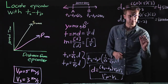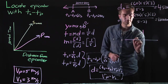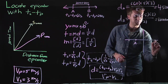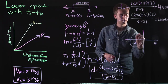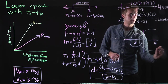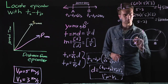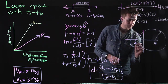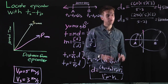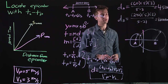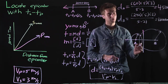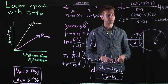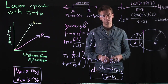To narrow down the direction, we can draw a circle around each station where the radius equals the distances we just found. The circles intersect at two points, giving us two possible locations for the epicenter. To decide which is correct, you would need a third station — which brings us to earthquake triangulation. But that's a video for a different time.